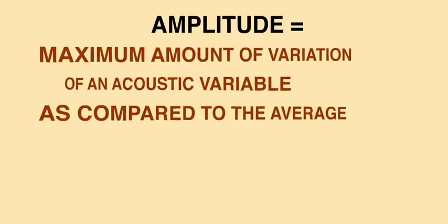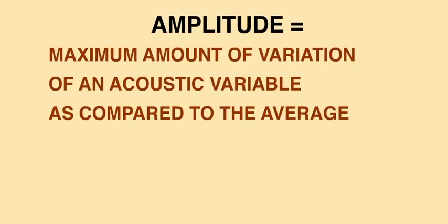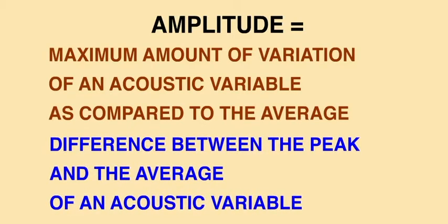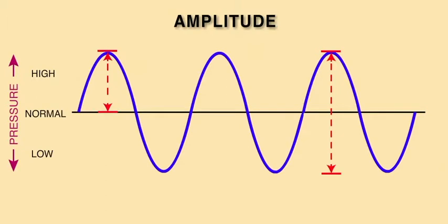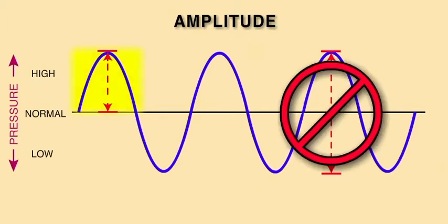The first term that describes wave strength is amplitude. By definition, amplitude is the maximum amount of variation of an acoustic variable as compared to the average. This definition could also be expressed as the difference between the peak and the average of an acoustic variable. Amplitude is a measure of how much difference exists between the average and maximum values of the sound wave. Notice on this diagram how amplitude is measured — not from the peak maximum to the trough, the minimum of the wave variable, but instead from the peak to the average, the normal resting baseline point.